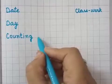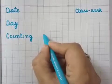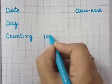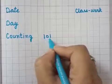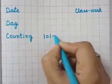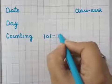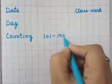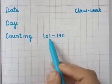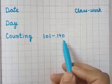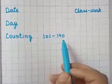Now leave one box and write down: 1, 0, 1 — that's one hundred one. Then a sleeping line and write down: 1, 4, 0 — one hundred forty. So today's work is from one hundred one to one hundred forty — aaj hum counting likhenge one hundred one se one hundred forty tak.